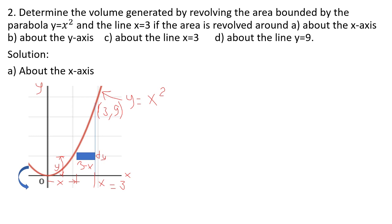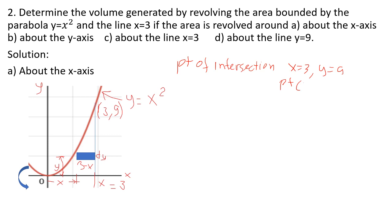For number 2: determine the volume generated by revolving the area bounded by the parabola y equals x squared and the line x equals 3. The area is revolved about: (A) the x-axis, (B) the y-axis, (C) the line x equals 3, and (D) the line y equals 9. The point of intersection is x equals 3 and y equals 9.